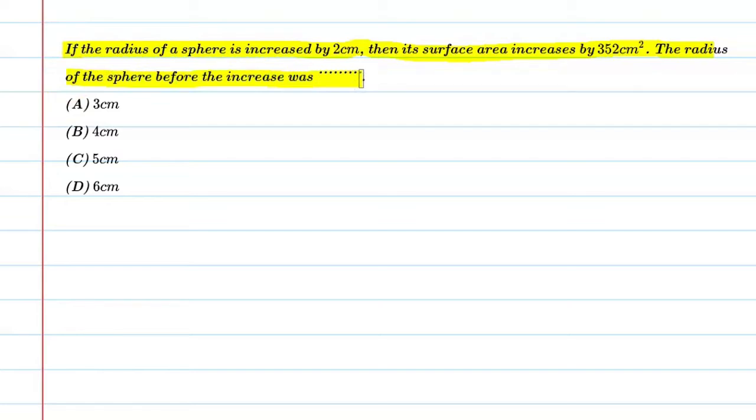So basically what does this mean? This question means that the radius of the sphere is increased by 2 centimeters, then the surface area increases by 352 square centimeters. We need to find what the radius was before the increase. Let's start.